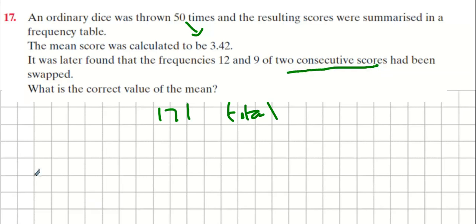So for argument's sake, imagine that two answers were 3 and 4. Well, that's not great. So imagine for argument's sake that the answer was 3 and 4. Actually, sorry, it's 12. It found that the frequencies 12 and 9 of two consecutive numbers have been swapped. So imagine that's 12 and that's 9.